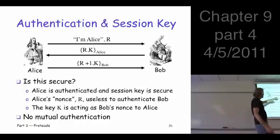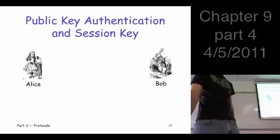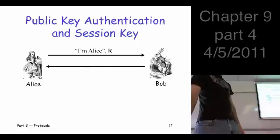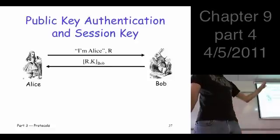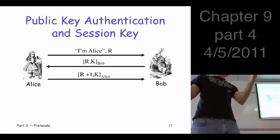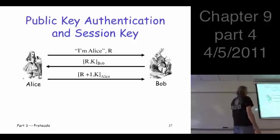So we did this with encryption. How about if we try signatures? Let's try that. So I'm Alice. Here's a challenge. And Bob signs. So he generates a session key. Signs R and K. Just like before, Alice sends back R plus 1 and K, but signed this time.